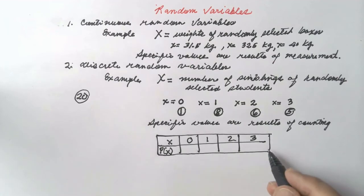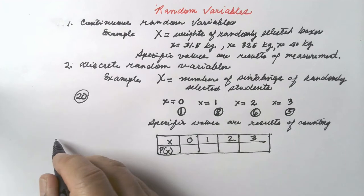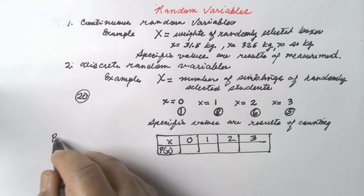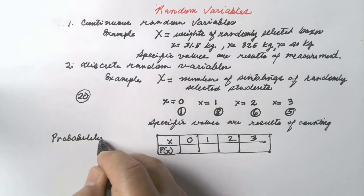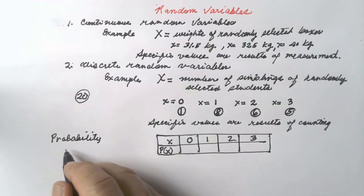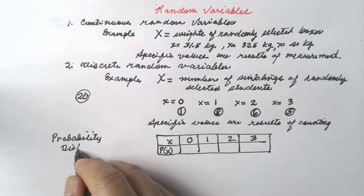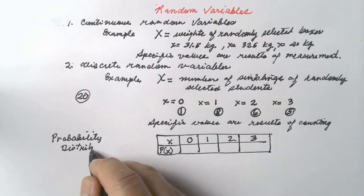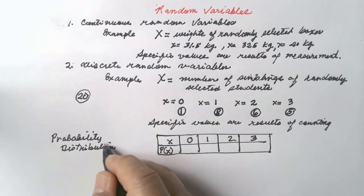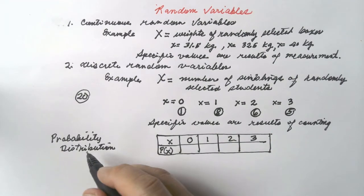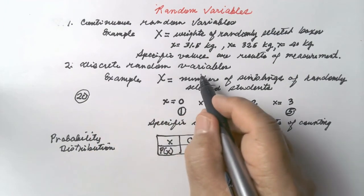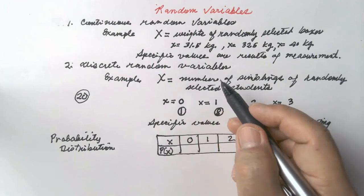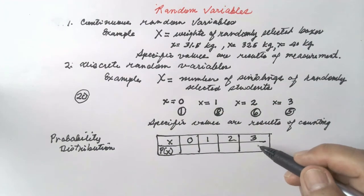This table of values is called a probability distribution table. It is a list of the possible specific values of a discrete random variable together with the corresponding probabilities.